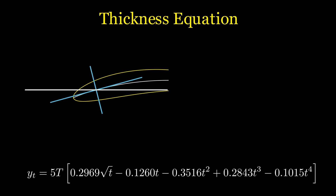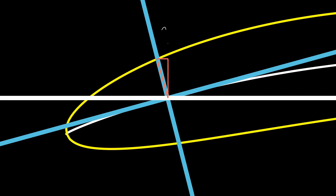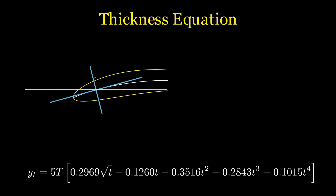If we zoom in, instead of going all the way up we go some cosine theta value up, then we go some sine theta over, and this hypotenuse is our thickness equation value. The same is true for the lower surface.